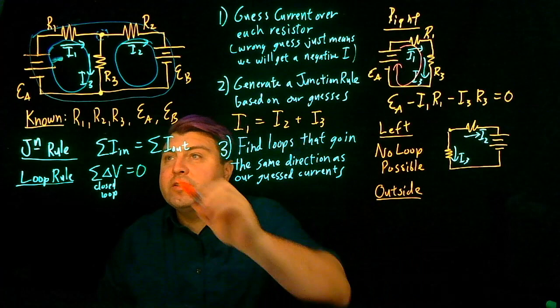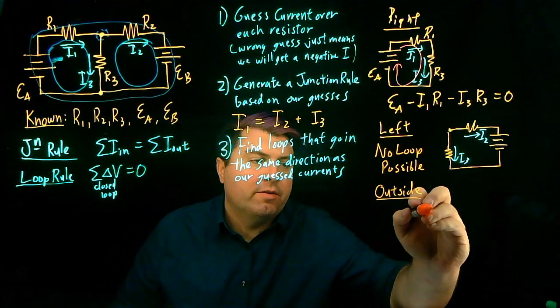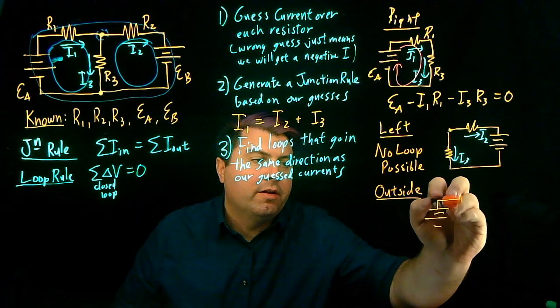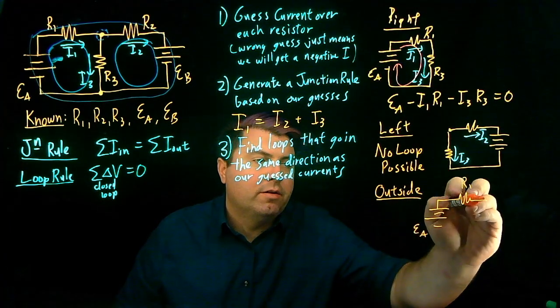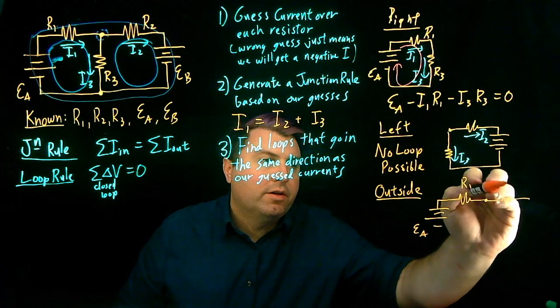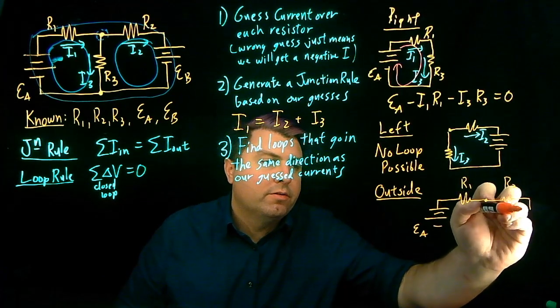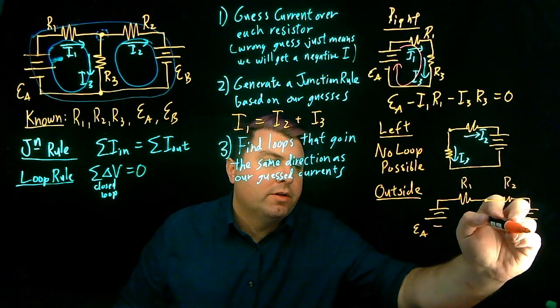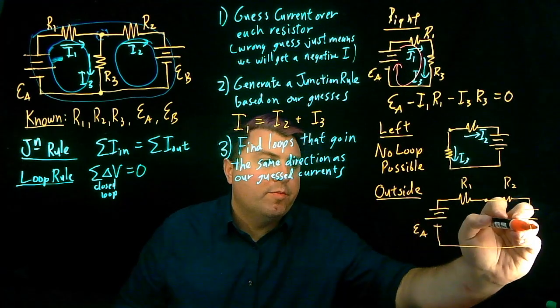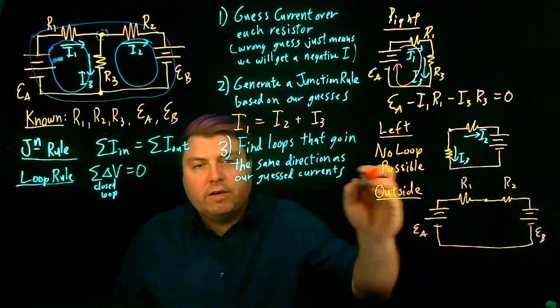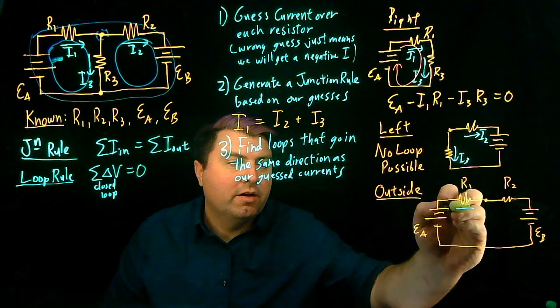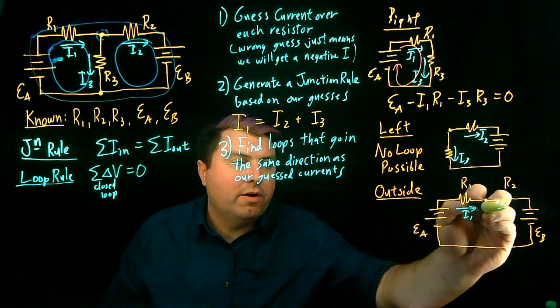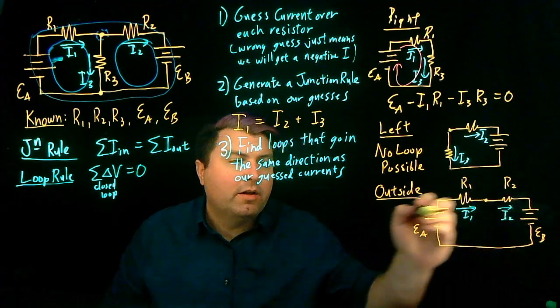For our outside, we're going to start with battery A, get resistor 1, get resistor 2, and get battery B, and we close the loop. And let's draw the currents that we guessed for this, I1 and I2.